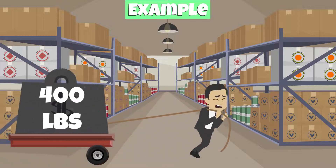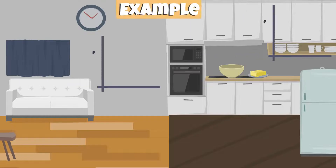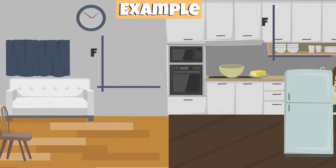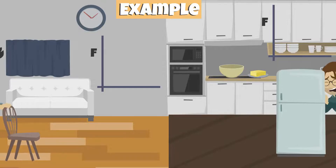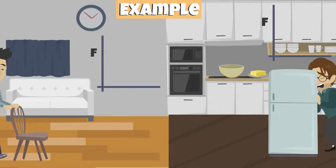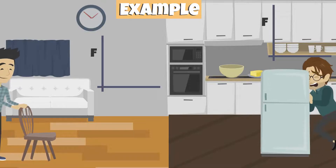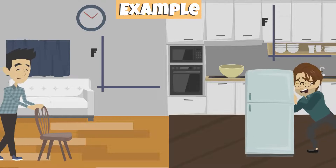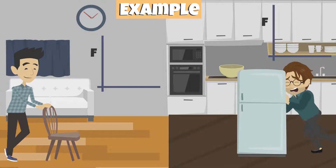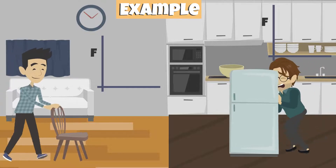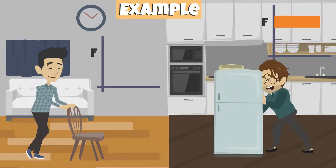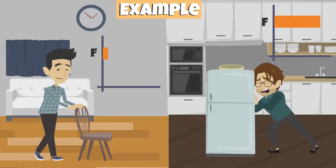You've probably noticed this when you've moved a chair and when you've moved the refrigerator. Both objects have different masses. Since the mass of the fridge is greater, it requires a greater force to move than when moving a chair.